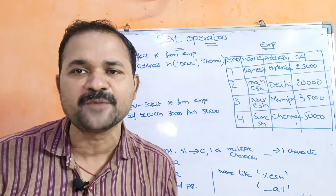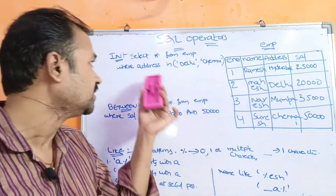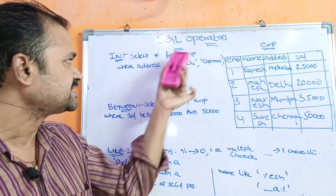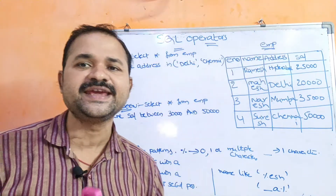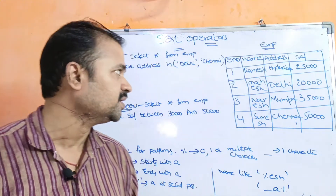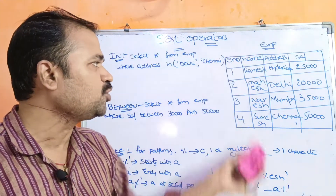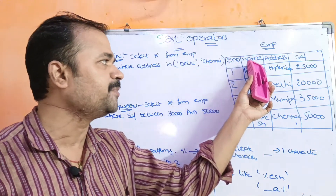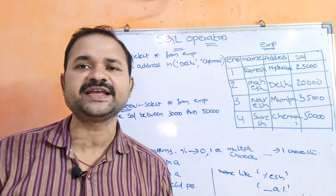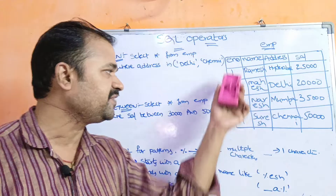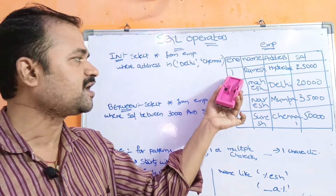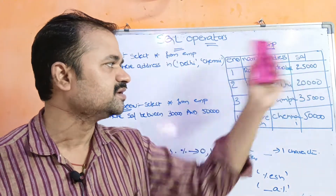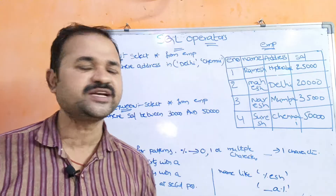Let us see with the help of an example. In the IN operator, here we have a table called EMP table. EMP table totally contains four columns: employee number, name, address, and salary. Here we have four records. First record: 1, Ramesh, Hyderabad, $25,000 salary.